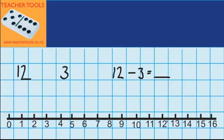So to answer that I can find 12 on my number line and then I need to count back three. One, two, three, or eleven, ten, nine. So the answer to 12 minus 3 is 9.